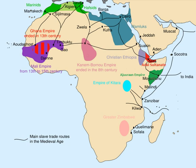Slavery in historical Africa was practiced in many different forms. Debt slavery, enslavement of war captives, military slavery, and criminal slavery were all practiced in various parts of Africa. Slavery for domestic and court purposes was widespread throughout Africa. Plantation slavery also occurred primarily on the eastern coast of Africa and in parts of West Africa. The importance of domestic plantation slavery increased during the 19th century due to the abolition of the Atlantic slave trade. Many African states dependent on the international slave trade reoriented their economies towards legitimate commerce worked by slave labor.